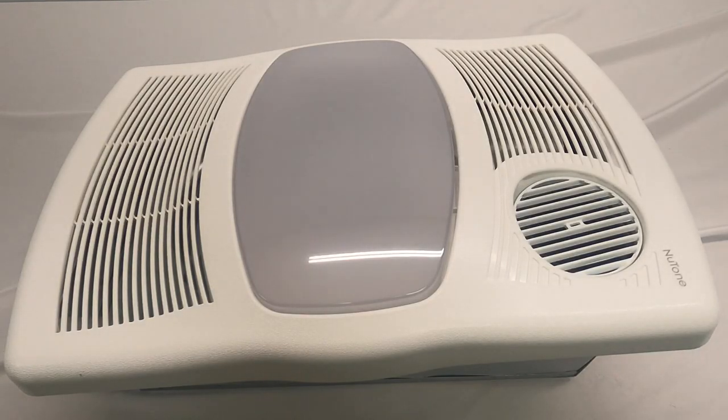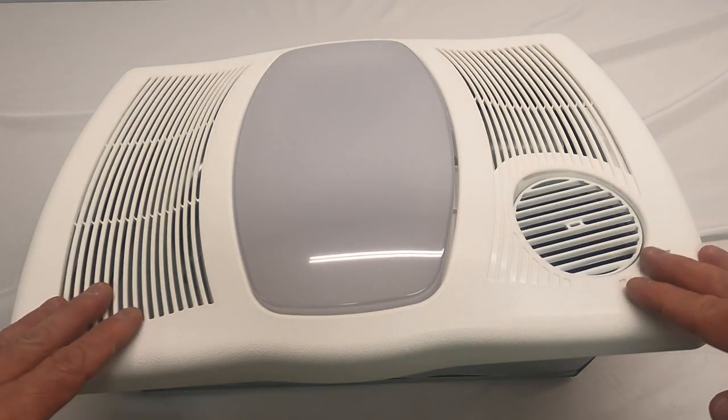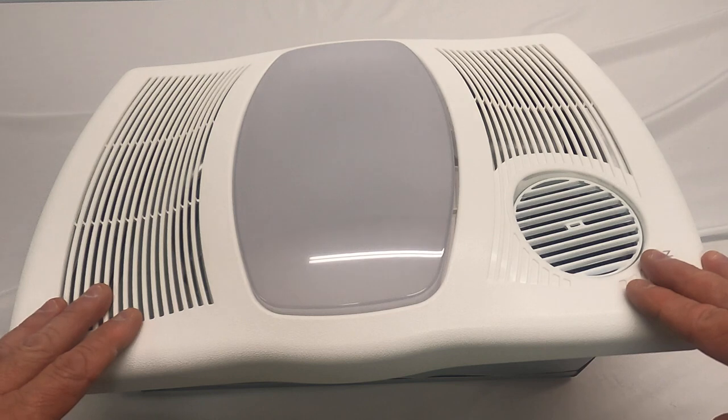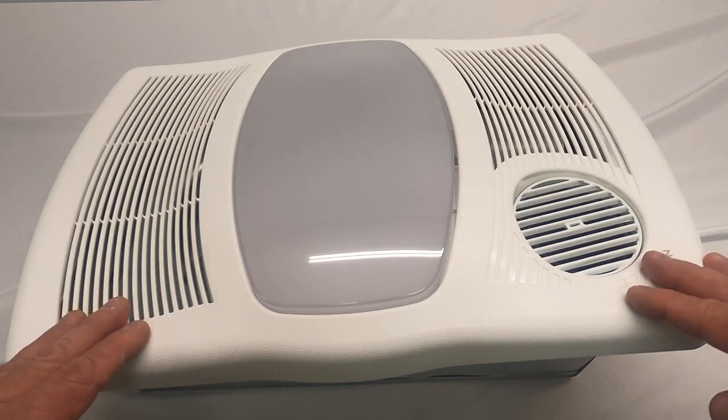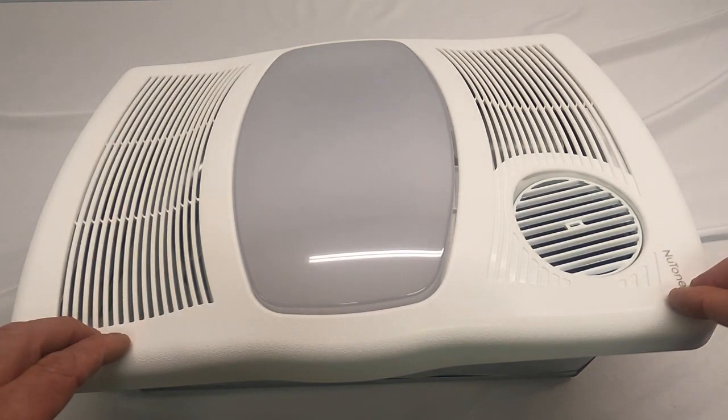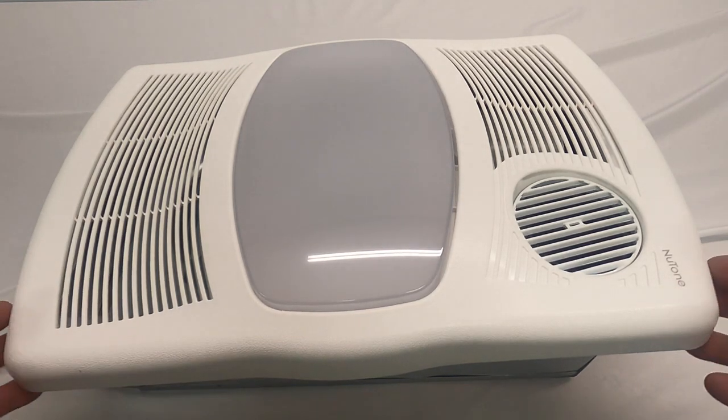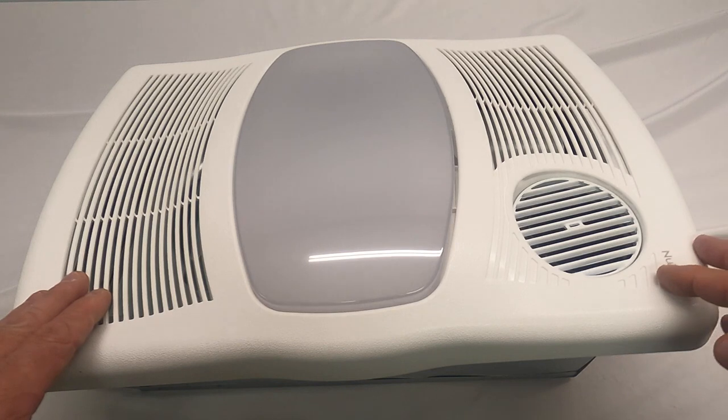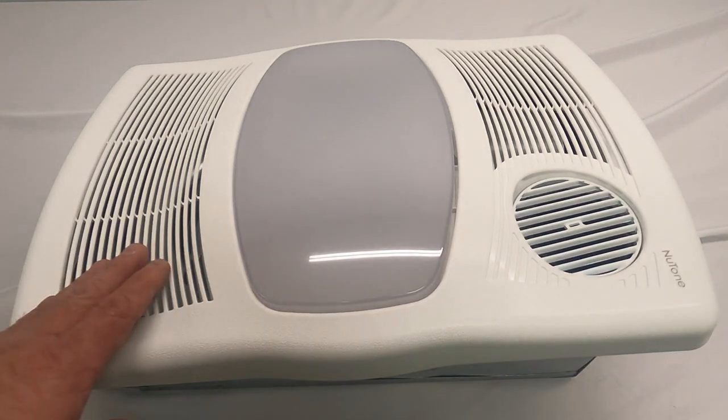Alright, the first thing we want to do before we get up into this unit is to turn off the main power. Turn that circuit breaker off anytime you go up inside to change the heater or the motor assembly. Just want to make sure that there's no power coming up to this unit. For filming purposes, I have this heater fan light unit sitting on a table.